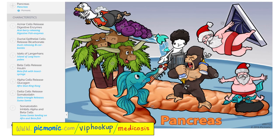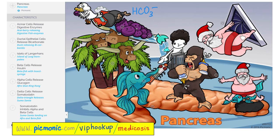Let's review the pancreas from Picmonic. There is exocrine pancreas and endocrine pancreas. The endocrine pancreas is towards the body and tail; exocrine is more to the head and uncinate process. The exocrine pancreas contains acinar cells and ductal cells. Acinar cells secrete the digestive enzymes; ductal cells secrete bicarbonate. The endocrine pancreas contains beta cells, alpha cells, and delta cells. Beta cells secrete insulin; alpha cells secrete glucagon; delta cells secrete somatostatin — a universal inhibitor that inhibits everything, including the beta and alpha cells.